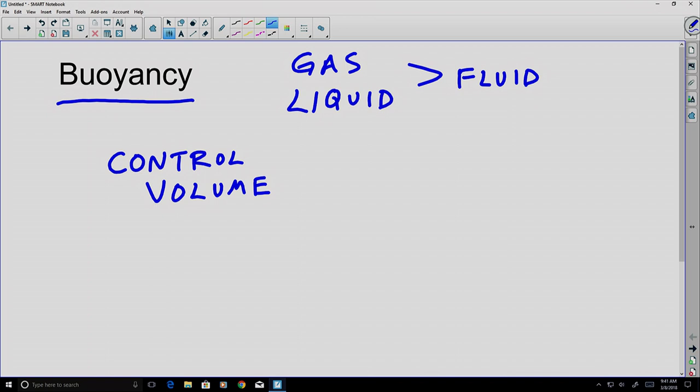So let's start with a control volume in the shape of a cylinder. And consider a column of air in the shape of a cylinder that's filling the cylinder.